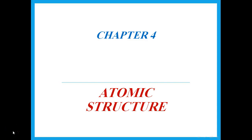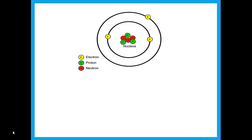This is Chapter 4, which deals with atomic structure. An atom is made up of a nucleus in the middle. The nucleus contains two types of particles, which we call subatomic particles — any of the particles inside the atom are called subatomic particles.